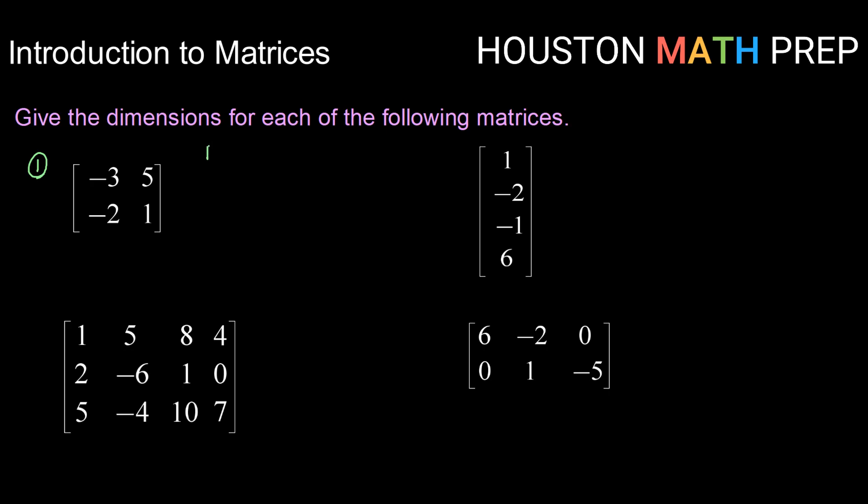Once again, dimensions come row by column. We need to first count up how many rows. One, two rows in this one, by how many columns? One, two. This matrix in example one is a two by two matrix.